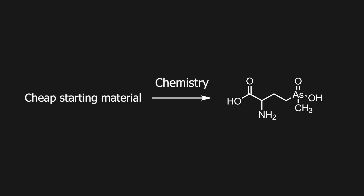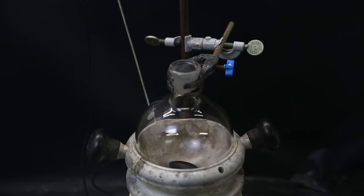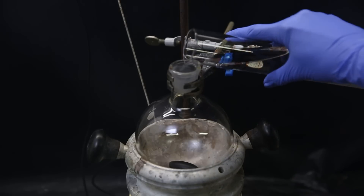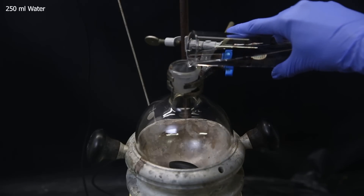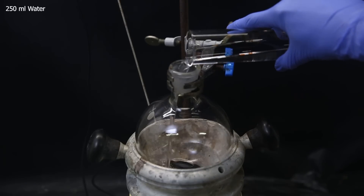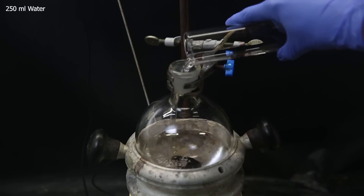There have been a few studies that produced arsenothricin synthetically, and in this video I will repeat one of those methods and see if it has any antibiotic properties. To get started, I set up a flask with a stir bar in a heating block, and add in 250 ml of water as a solvent.